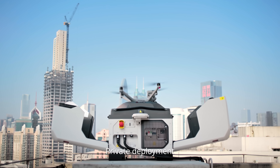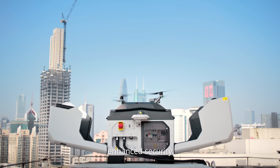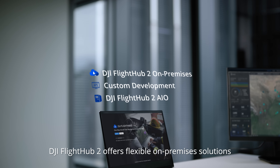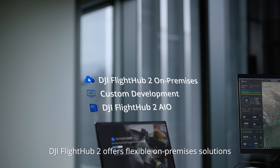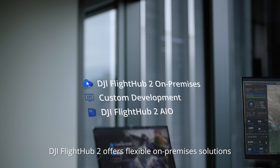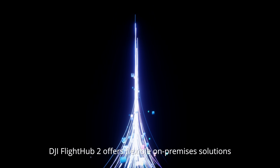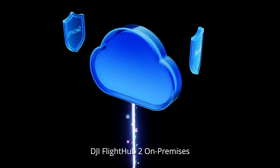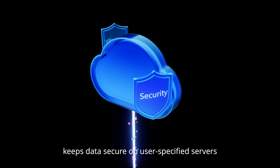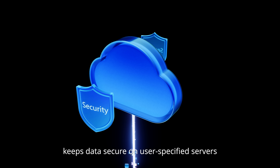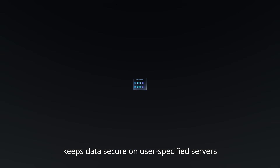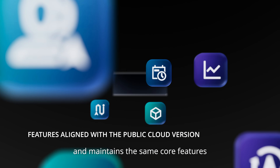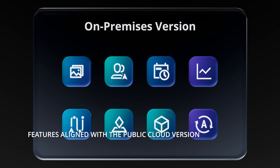Private deployment. Enhanced security. DJI FlightHub 2 offers flexible on-premises solutions. DJI FlightHub 2 on-premises keeps data secure on user-specified servers and maintains the same core features as the public cloud version.